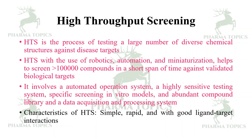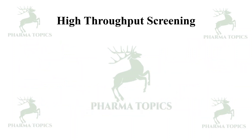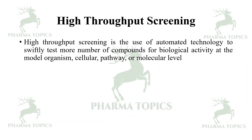The characteristics of high throughput screening are that they are simple, very rapid, and provide good ligand-target interaction information. High throughput screening uses automated technology to swiftly test more compounds for biological activity at the model organism, cellular, pathway, or molecular levels.